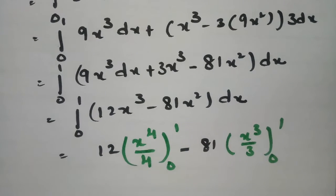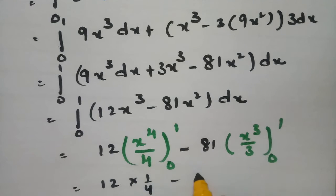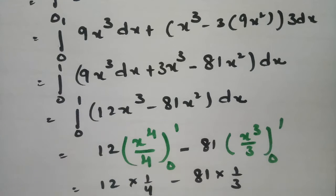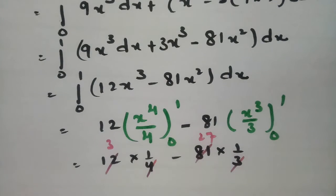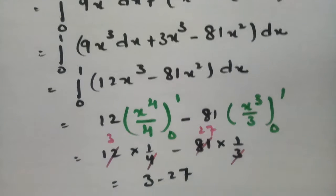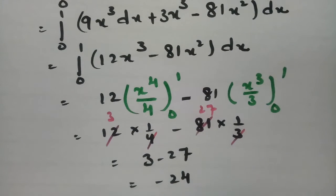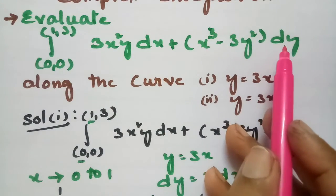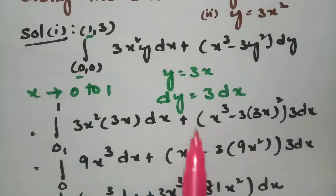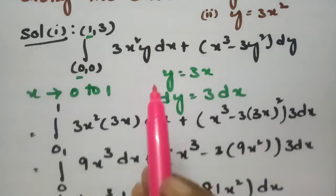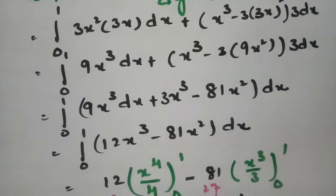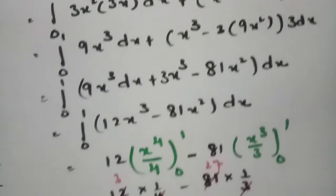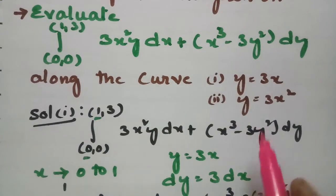So if I substitute the value, this will be 1/4 minus 81 times 1/3. After cancellation, 3 goes three times and 27 times, so the value is 3 minus 27, which equals minus 24. Therefore, along the curve y = 3x, we got this whole integral value as minus 24.